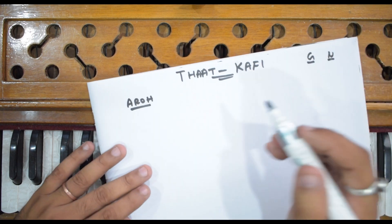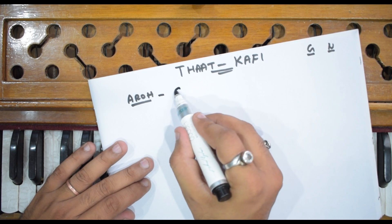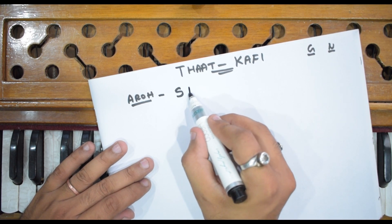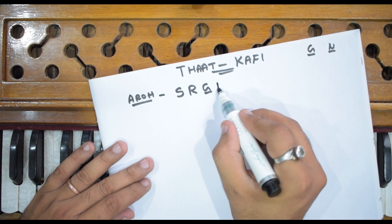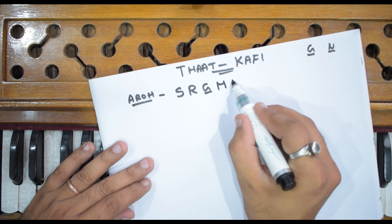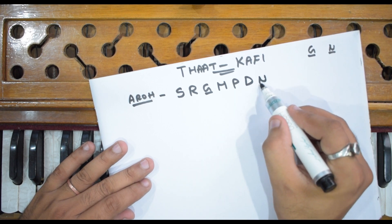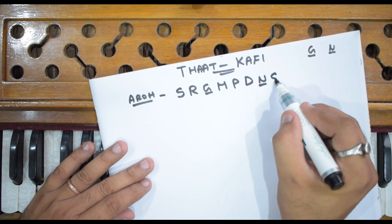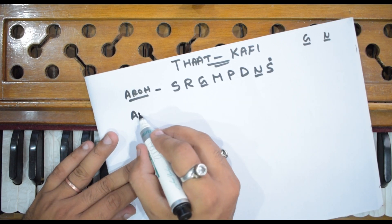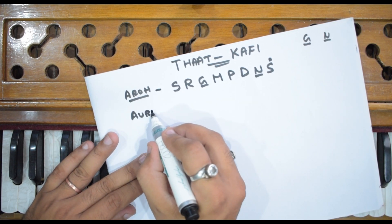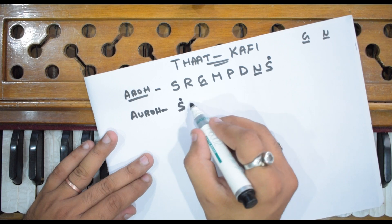And the rest of the swaras are Shuddh. The aroha of this Thaat is: Sa, Shuddh Re, Komal Ga, Ma, Pa, Shuddh Dha, Komal Ni, and Taar Saptak Sa.